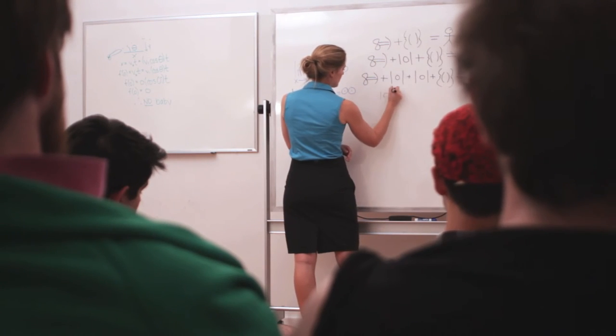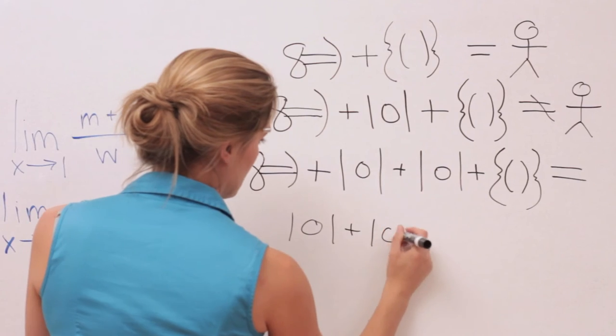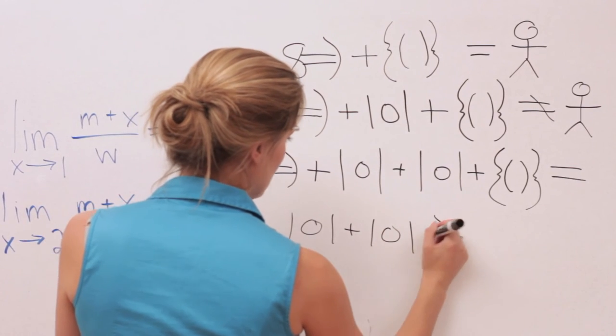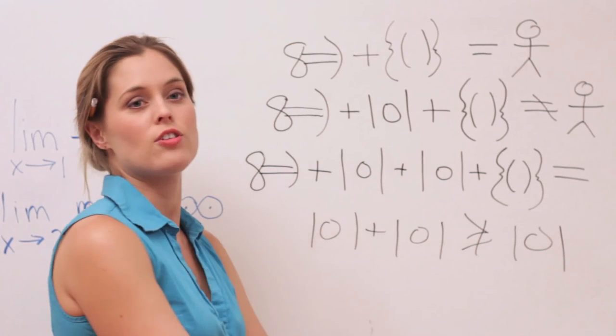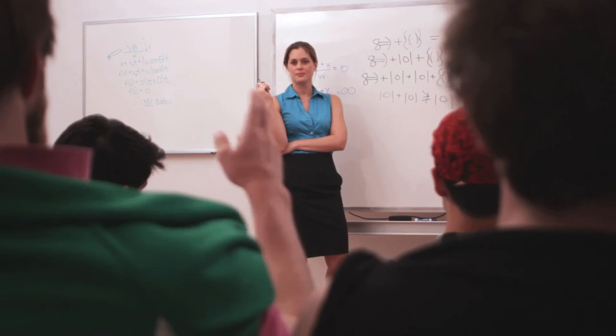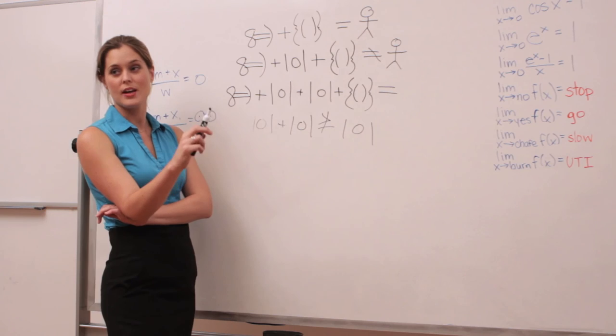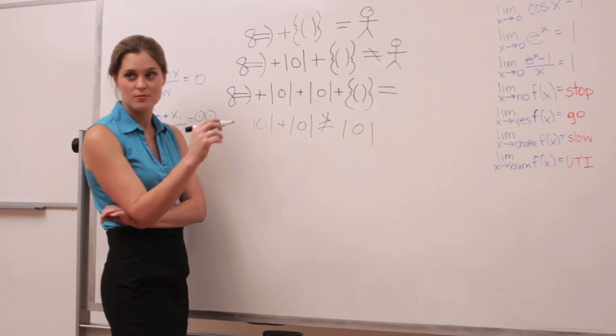Two condoms is not greater than or equal to one condom. Any questions? Can we skip ahead to integration by parts? See me after class.